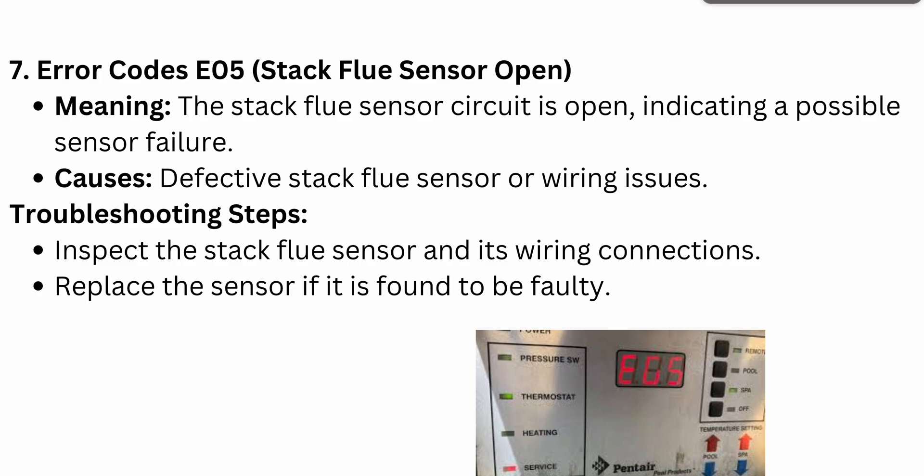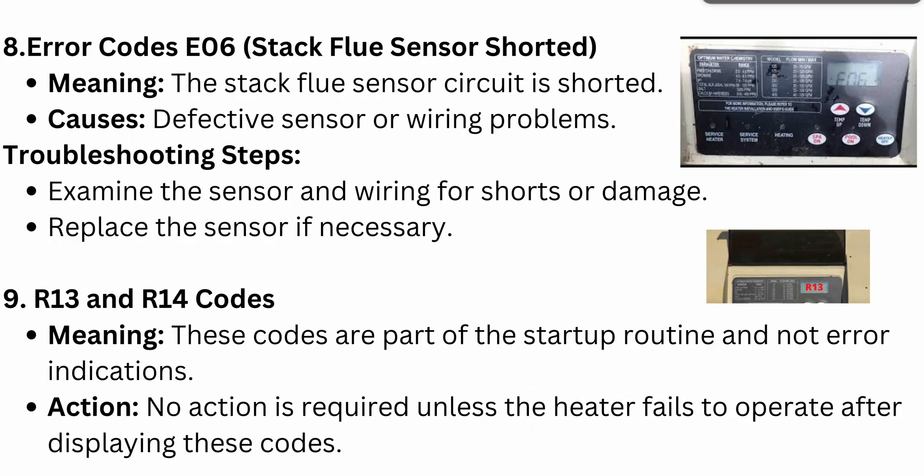Error code E06 is stack flue sensor shorted. It means the stack flue sensor circuit is shorted. The causes can be a defective sensor or wiring problems. The troubleshooting steps are to examine the sensor and wiring for shorts or damage, and replace the sensor if necessary.